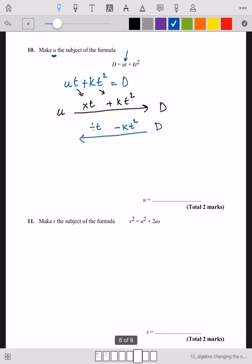Plus kt squared changes to take away kt squared and times t changes to divide by t. Start with d. Take away kt squared all over divide by t.